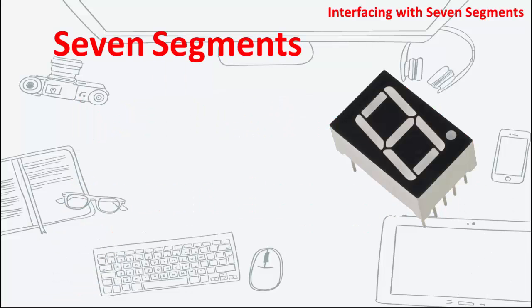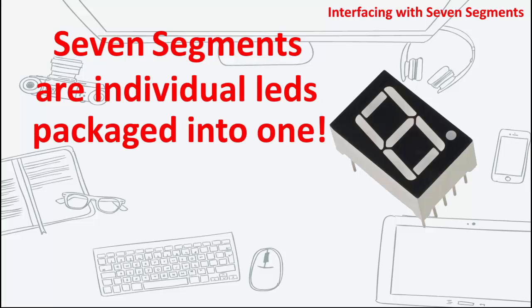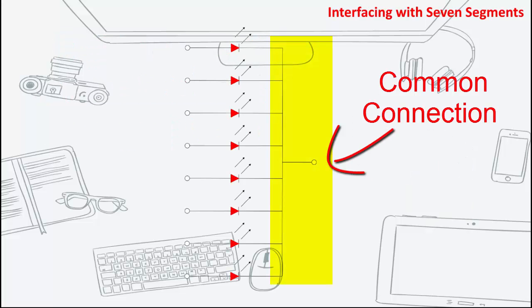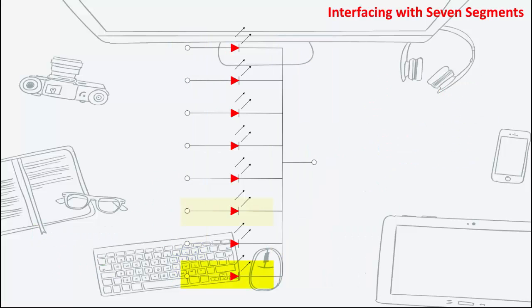A 7-segment is a display that consists of 7 individual LEDs packaged into one. The 7-segment displays have a common connection, while the rest of them are connected individually to a controller, which activates or deactivates each segment.